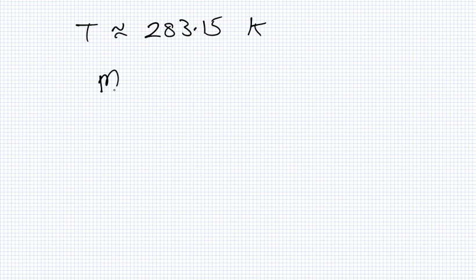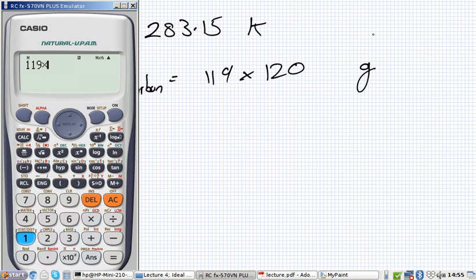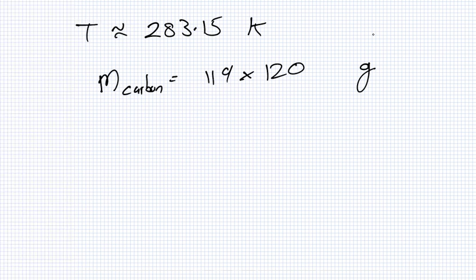So the mass of the carbon released will be 119 per one kilometre, times 120. Let's have a look at that. 119 times 120, so that's 14,280 grams of carbon.